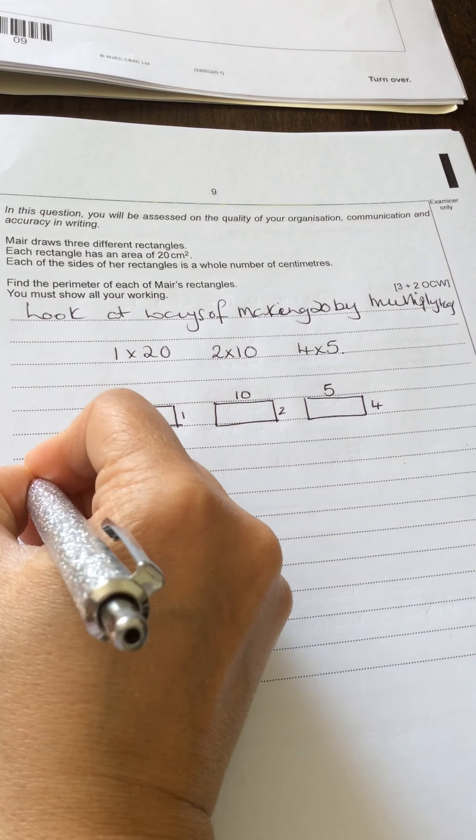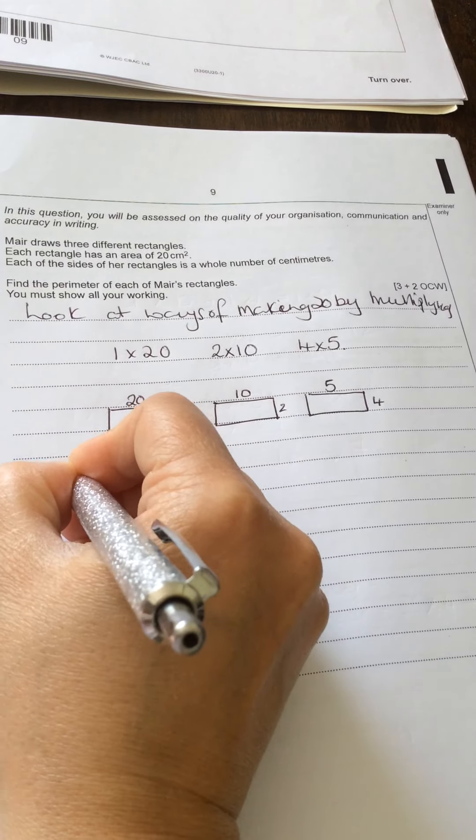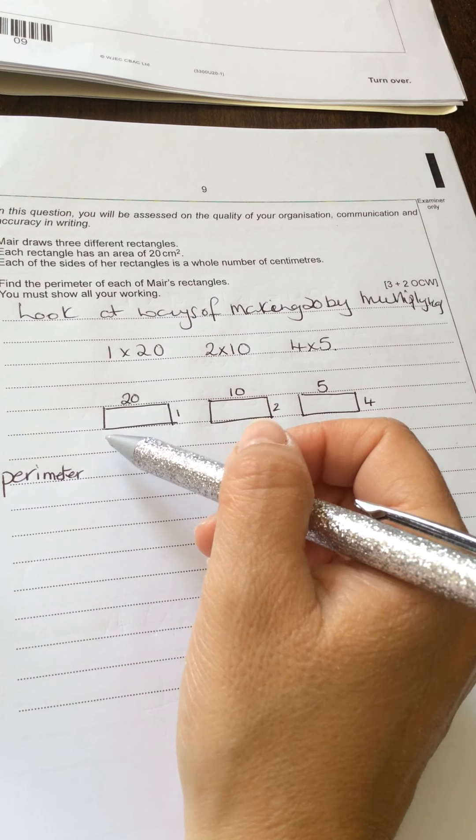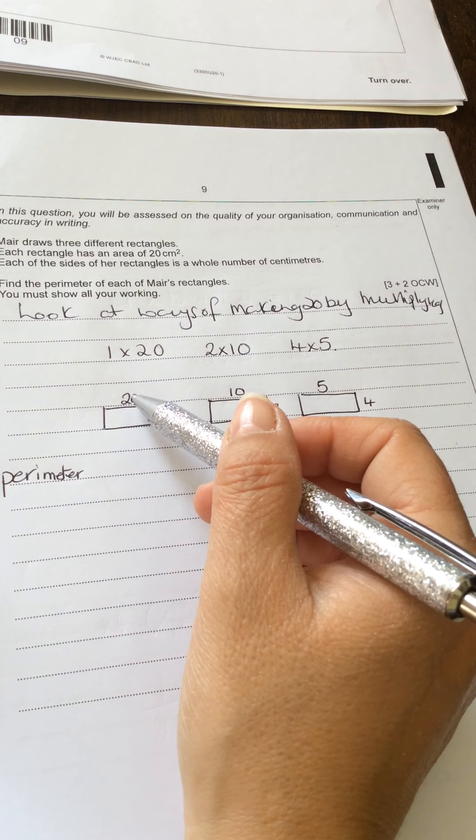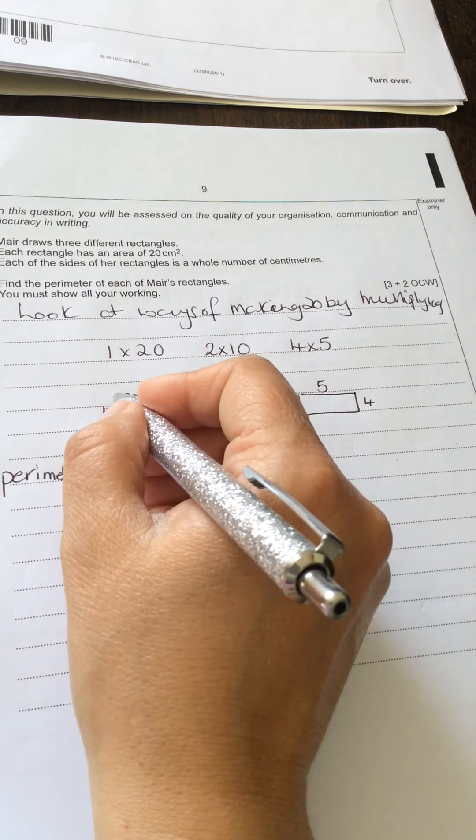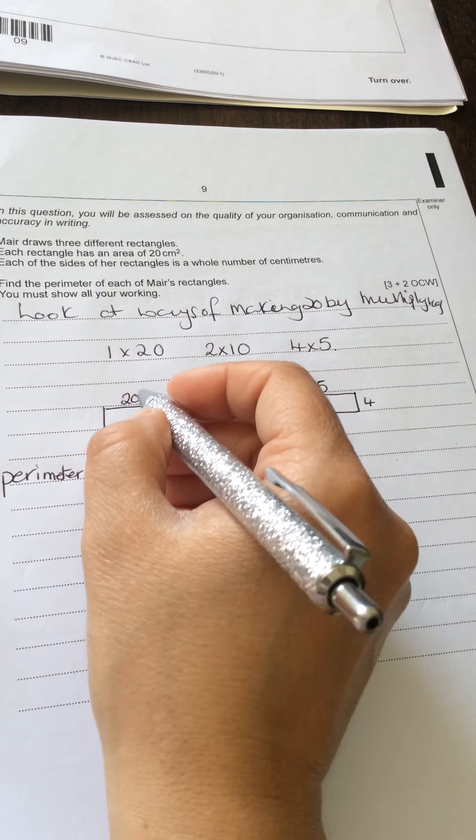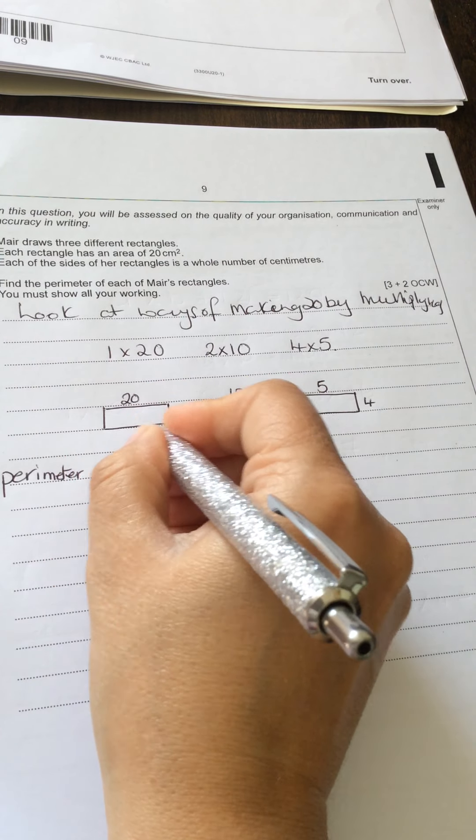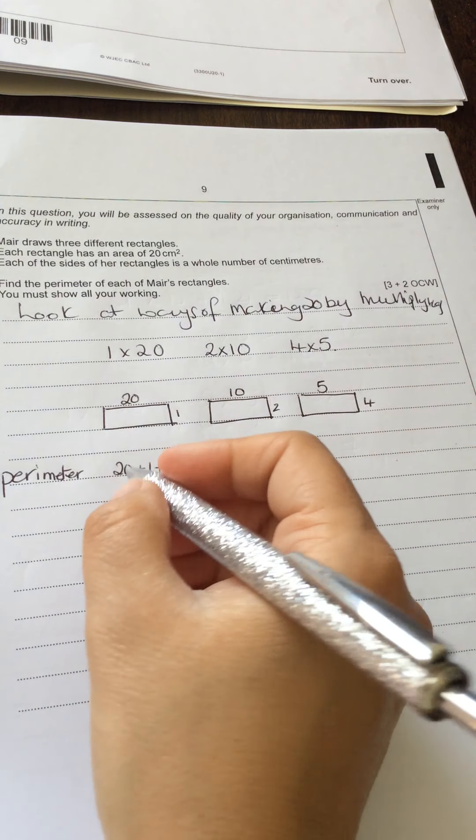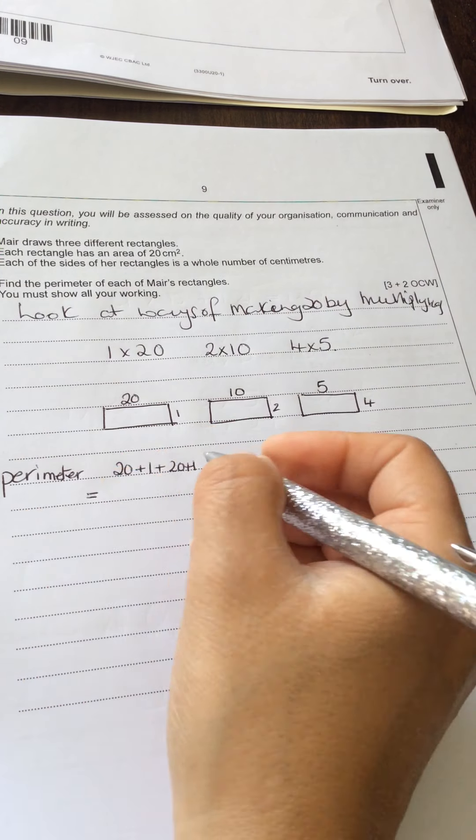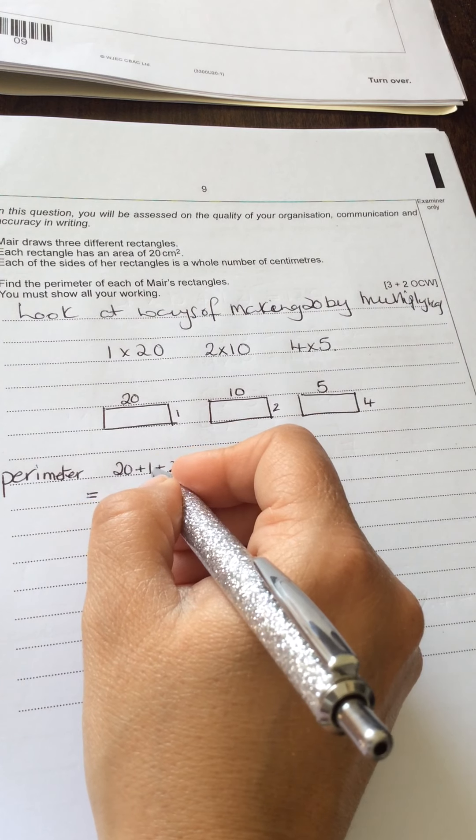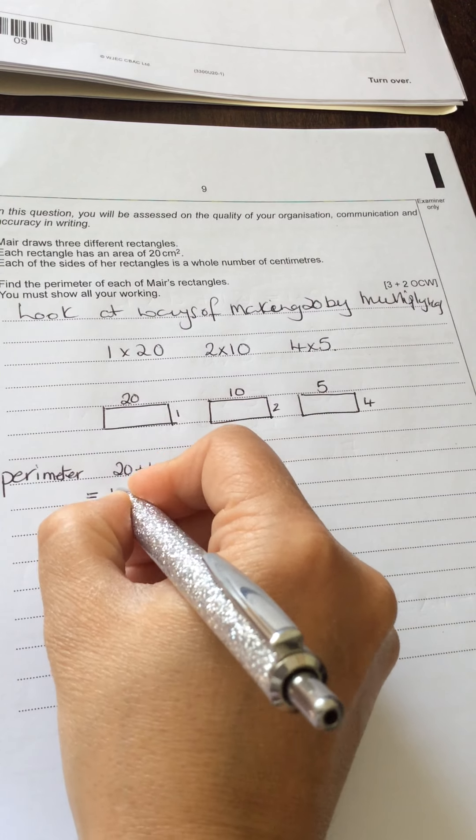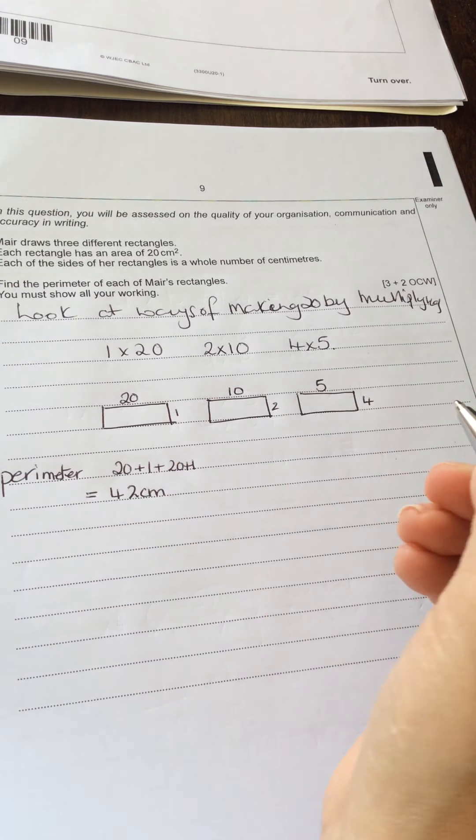And we've now got to work out the perimeter. So the perimeter, to find the perimeter, we add together the sides as we go along. So starting here, it'd be a 20 plus the 1 plus a 20 plus a 1. So the perimeter for this one would be 20 plus 1 is 21 plus another 20 is 41 plus another 1 is 42. So it'd be 42 centimeters.